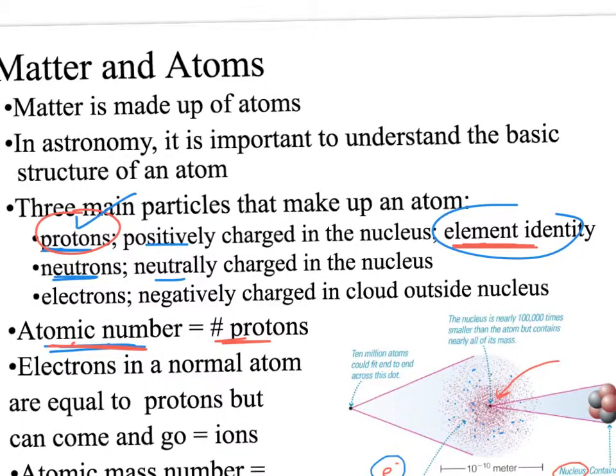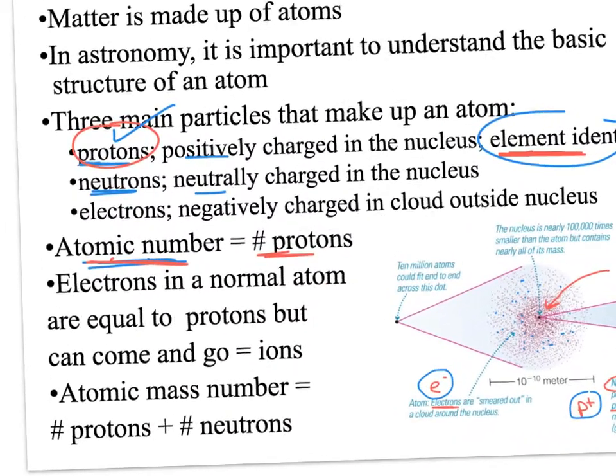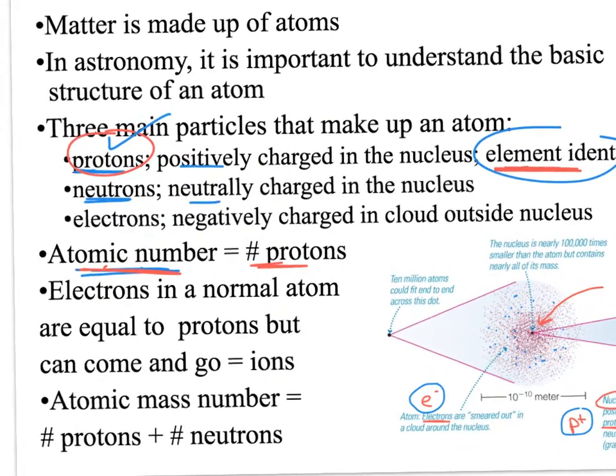Speaking of atoms, most normal atoms typically have the same number of protons as you do electrons, and if they are equal, then you end up with an atom that doesn't have any charge - what we call a neutral atom.